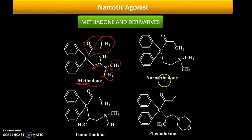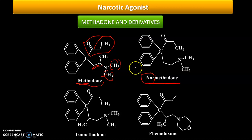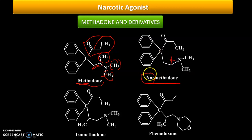The next structure is normethadone. The word itself indicates its meaning: 'nor' means removal. From carbon number one, they simply removed the methyl group, and hence this compound is known as normethadone.